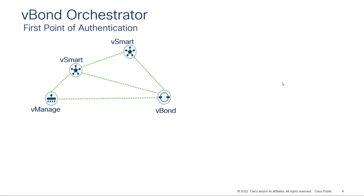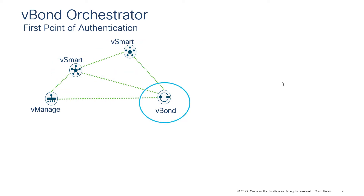Let's look at our first function where the V-BON is the first point of authentication into the SD-WAN network. Here I have an SD-WAN network with one V-Manage, two V-Smarts, and one V-BON. Note that this picture doesn't necessarily reflect the correct numbers of controllers in the network, as we're just focusing on function here. It also shows a high-level view because there are actually additional control connections between our V-BON and our other controllers, but for now let's just take this simplified view.